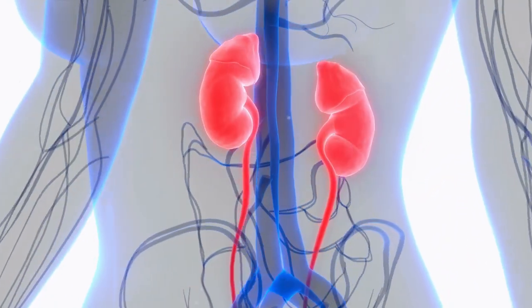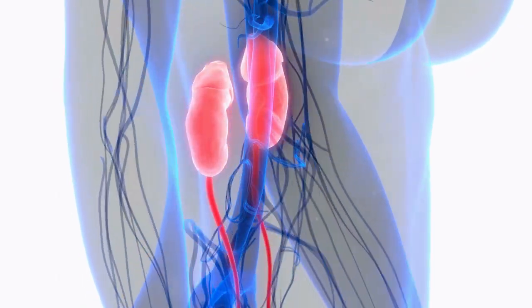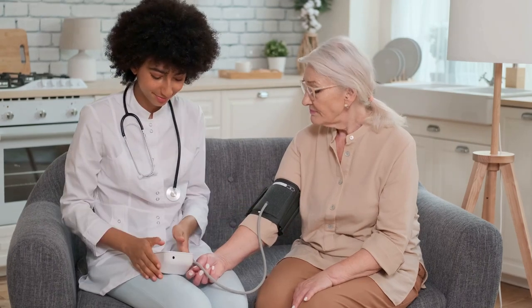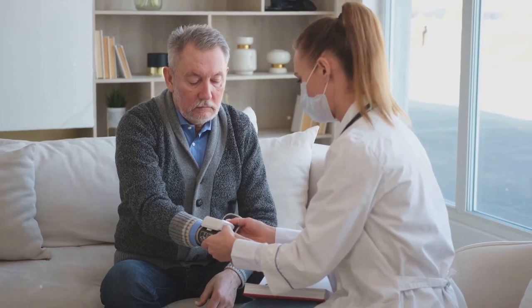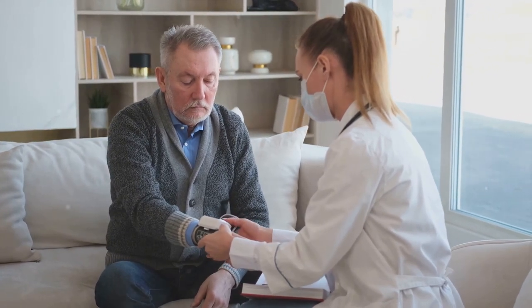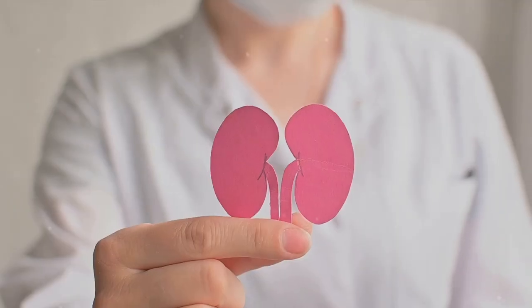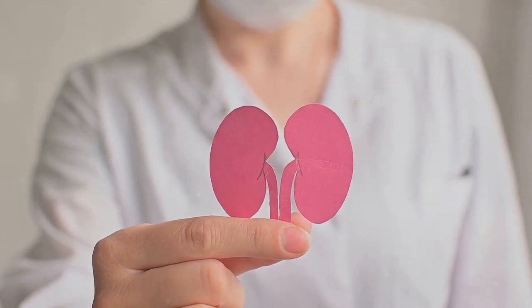And there you have it. 10 signs that might indicate chronic kidney disease. From changes in urination to unexplained back pain, these symptoms can often go unnoticed until the disease has progressed significantly. Remember, over 37 million American adults are living with kidney disease, many without even knowing it. This is why regular checkups are so crucial, especially if you're at risk due to factors like high blood pressure, diabetes, or a family history of kidney disease. If you notice any of these signs, don't hesitate to consult with your doctor. Early detection can make a world of difference in managing this condition. And the first step starts with you being aware and proactive about your health.